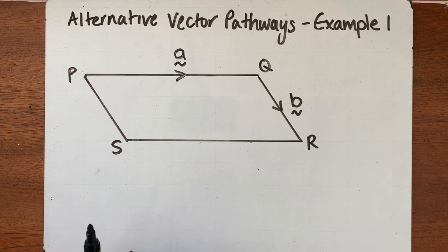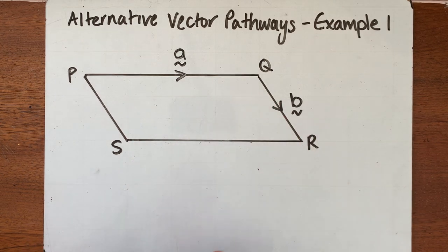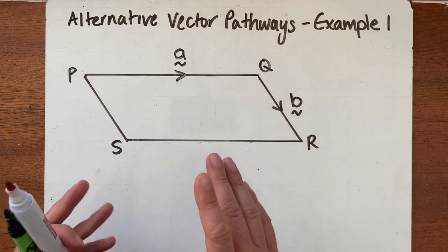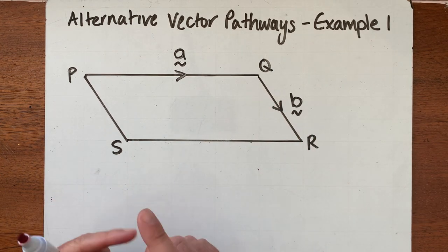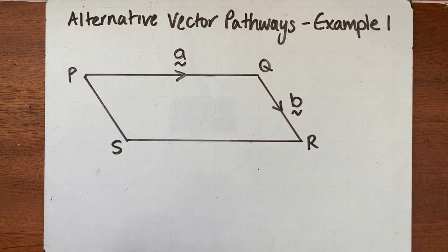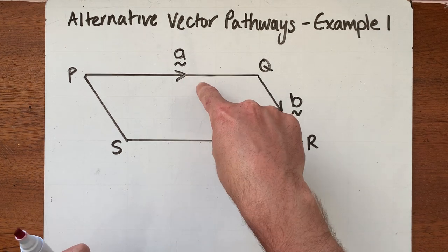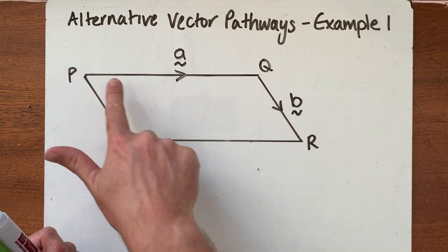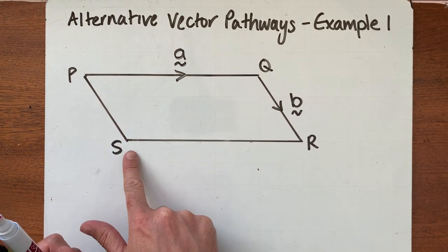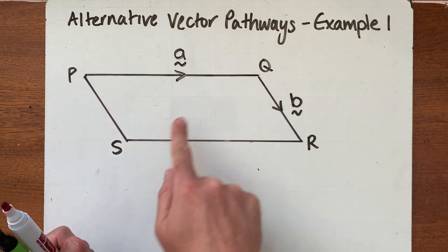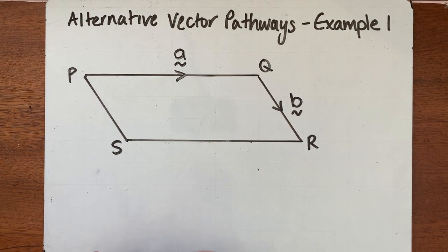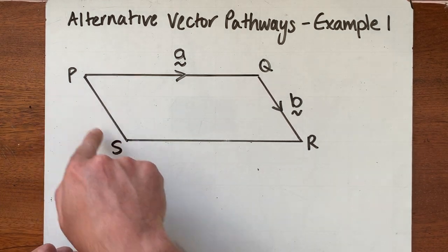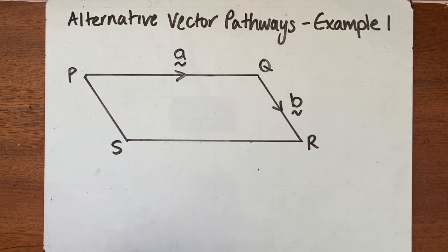What we've got here is a parallelogram, and that's really important. Things we know about parallelograms are that they have two pairs of parallel sides, so side PQ and side SR are parallel, and side PS and QR are parallel.